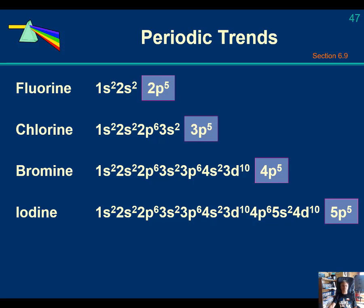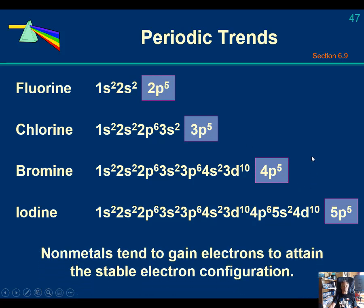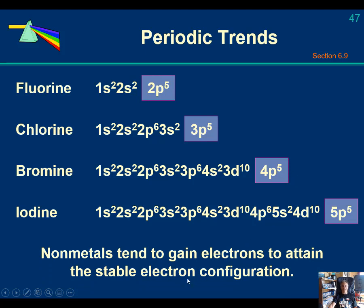So fluorine would like to have 1 valence electron, so that it can have neon's electron configuration. Chlorine would like 1, so it can have argon, and krypton, and xenon, and so on. Non-metals tend to gain electrons to try and fill their valence shells to attain noble gas electron configuration.